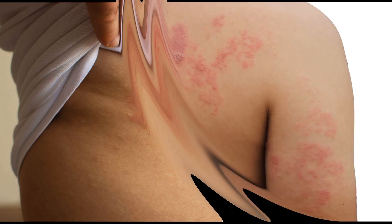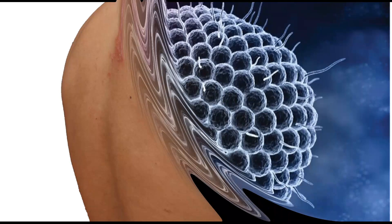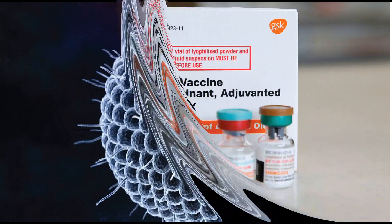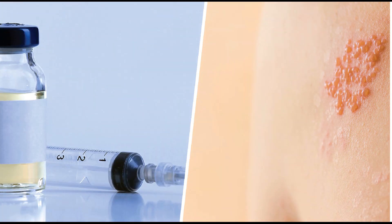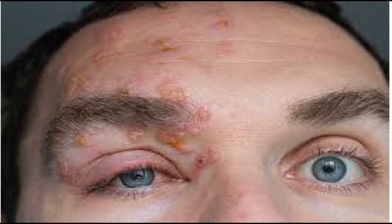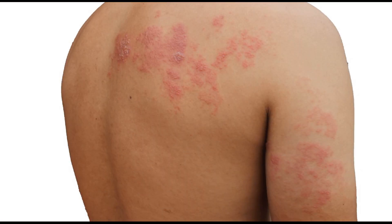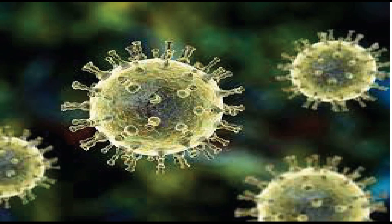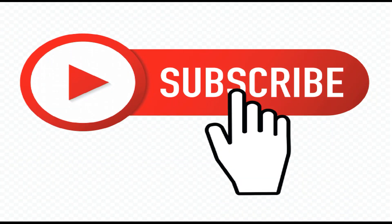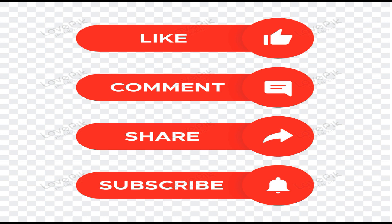Prevention of shingles is possible through vaccination. The varicella zoster vaccine, also known as the shingles vaccine, is recommended for individuals aged 50 and older. It can reduce the risk of developing shingles and decrease the severity of symptoms if the infection does occur. It is therefore important to seek medical attention if you suspect you have shingles, as early treatment can help alleviate symptoms and prevent complications. That is all Karim's Clinic had for today — thanks for listening.